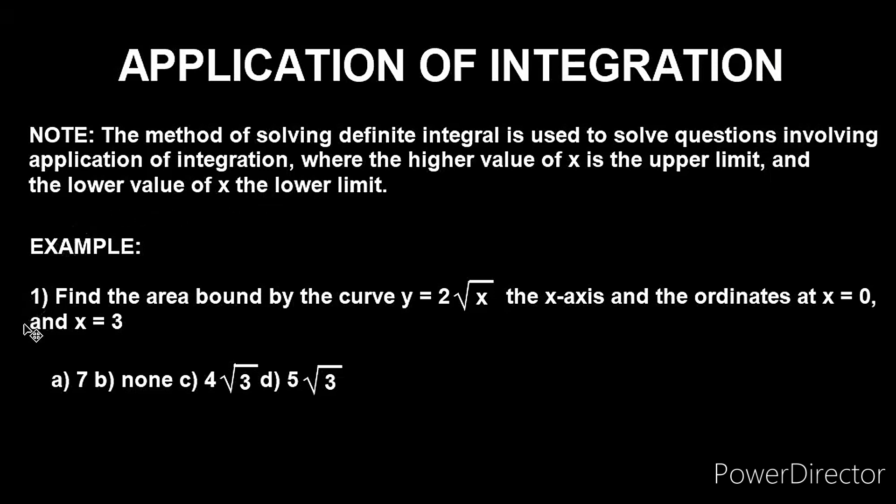Example 1 here says, find the area bound by the curve y equals 2 square root of x, the x-axis, and the ordinates at x equals 0 and x equals 3.